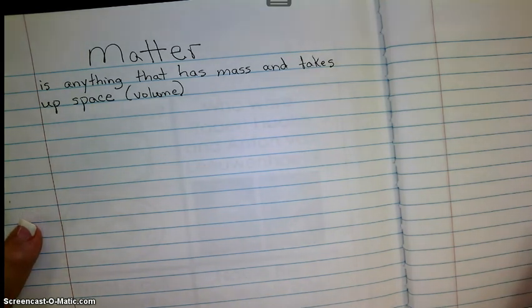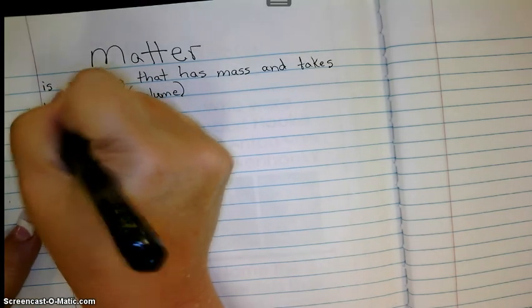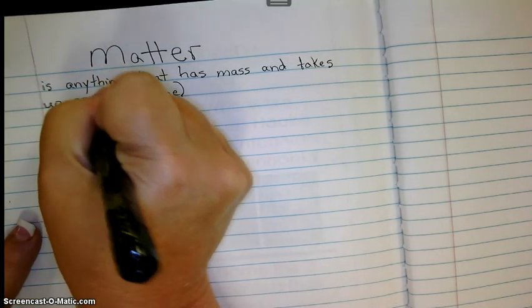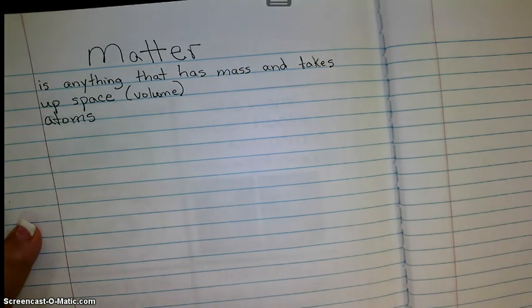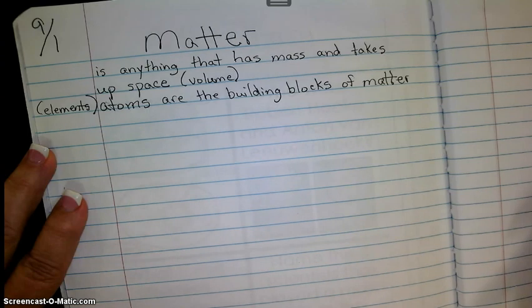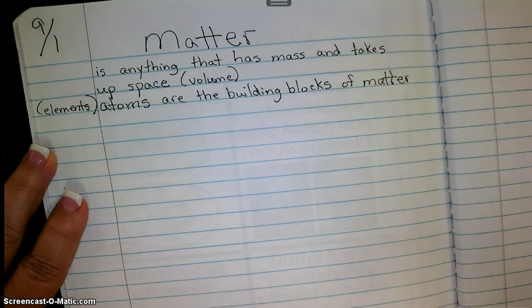Now, atoms are the building block of matter. So remember the periodic table, there were elements on the periodic table. Atoms are the building blocks of matter.